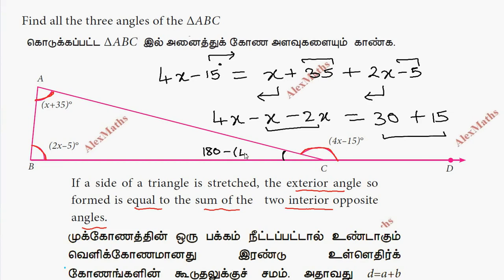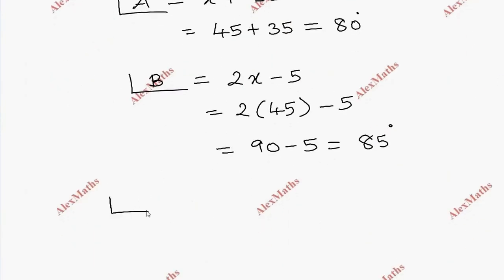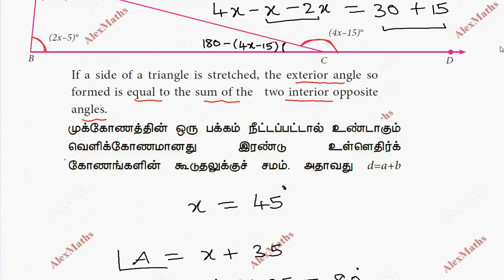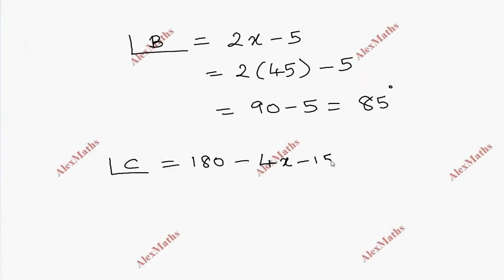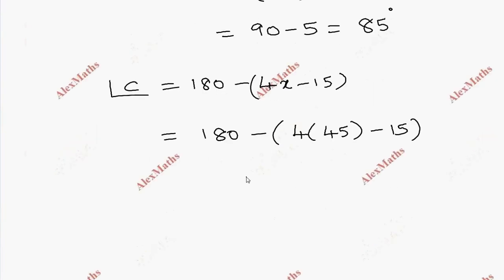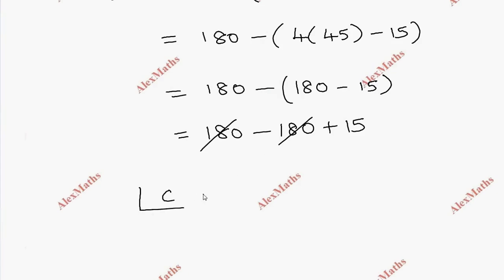Angle C equals 180 minus the exterior angle 4x minus 15. Substituting x equals 45, we get 180 minus 4 times 45 minus 15, which equals 180 minus 180 minus 15. This simplifies to 180 minus 180 plus 15, so angle C equals 15 degrees.